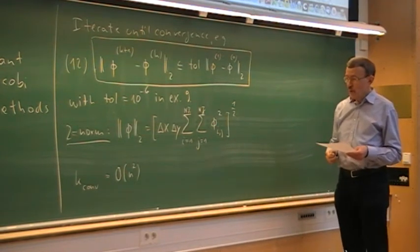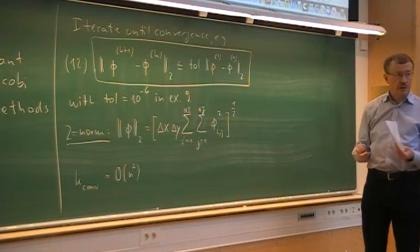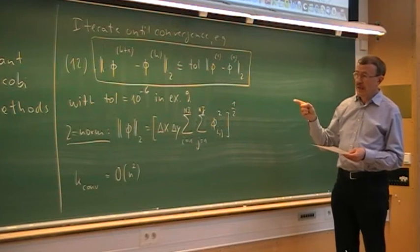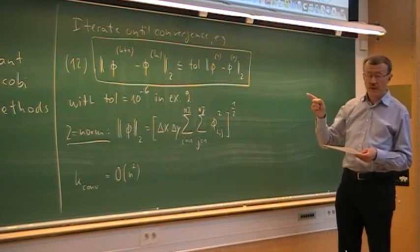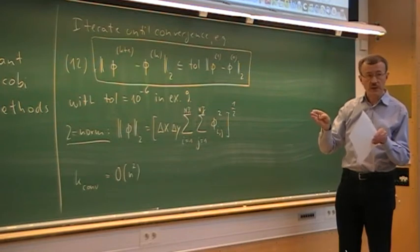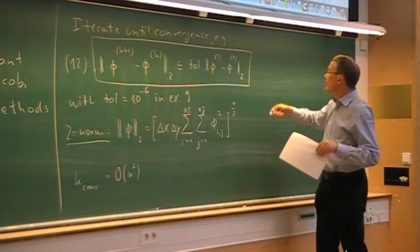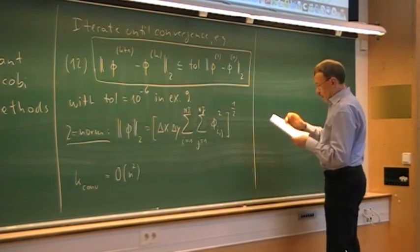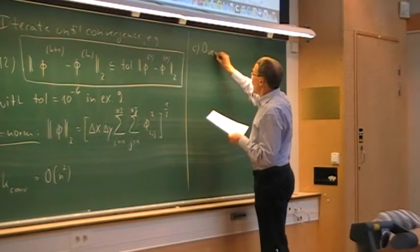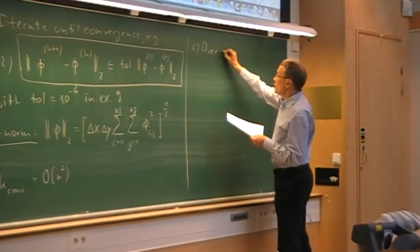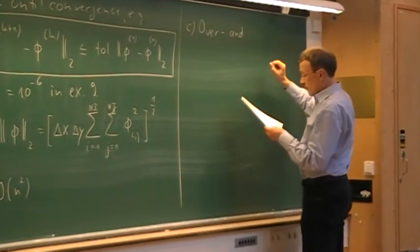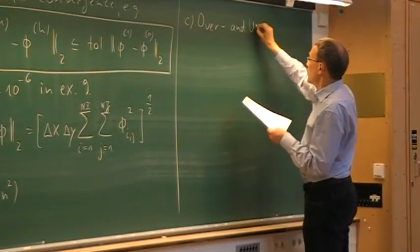So the more unknowns we have, the more iterations it will take. However, Gauss-Seidel is about twice as fast as Jacobi, so you need only about half the number of iterations for Gauss-Seidel compared to Jacobi. Now there is an important thing to note about how we correct our whole solution from one iteration to the next one, and that is under the heading of over and under relaxation.